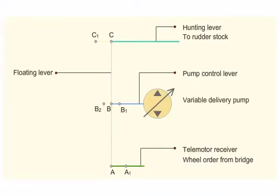When wheel order is starboard, the telemotor control moves the floating lever to A2 and the floating lever controls the pump discharge according to the feedback received from the hunting lever.